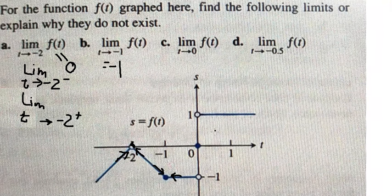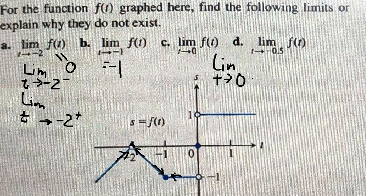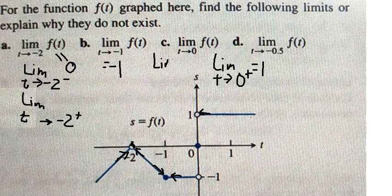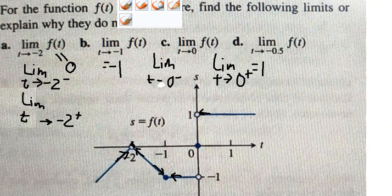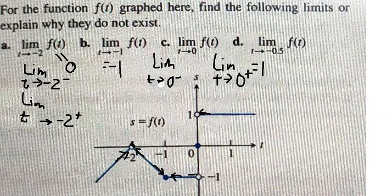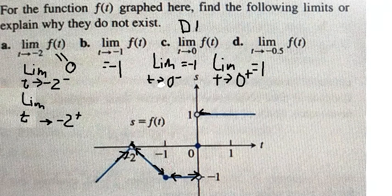For part c, when t approaches zero from the right, they go closer to one. On the left of zero, they go to negative one. Since the left-hand limit and the right-hand limit are not the same, the limit does not exist.